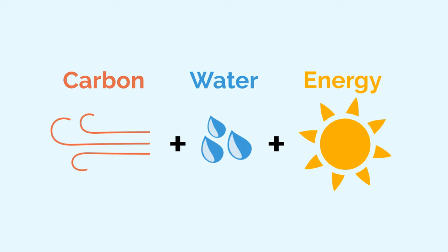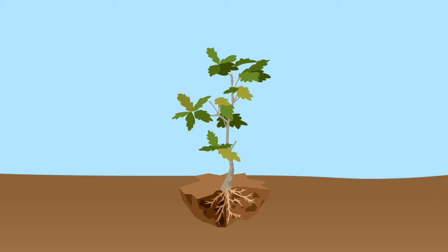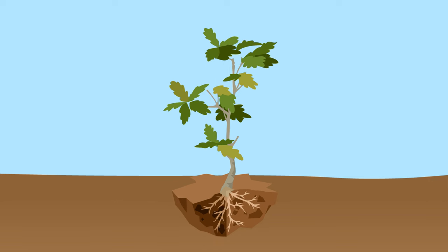So the carbon from the air, along with water and energy from the sun, help to make these structures. As cells grow, they divide and make new cells. These new cells are how plants get bigger.